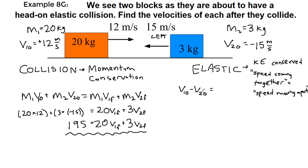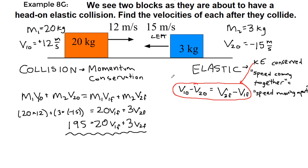In equation form: v1_initial − v2_initial = v2_final − v1_final. This equation will be given if we need it, and it is much easier than using kinetic energy conservation directly. It works for one-dimensional collisions; we will not be doing two-dimensional elastic collisions in Physics 125. Plugging in our values: 12 − (−15) = v2_final − v1_final.